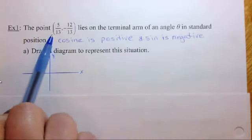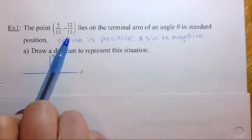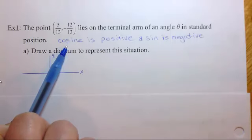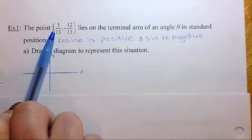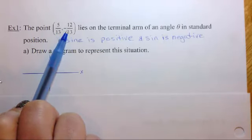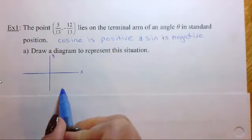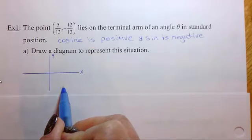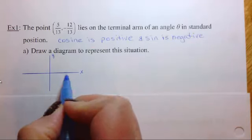Alright, in this question here it says the point 5 over 13 comma negative 12 over 13 lies on the terminal arm of an angle theta in standard position. Now there's a couple of things we need to note here. We need to note that cosine is positive. So the x value is positive. And sine is negative. So the y value here in this coordinate point is negative. We need to make sure that we are aware of where it's going to be on our graph.